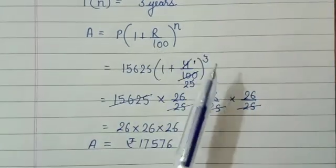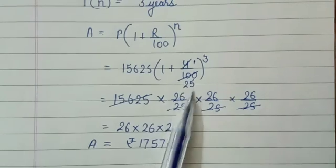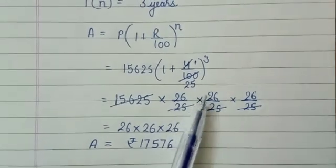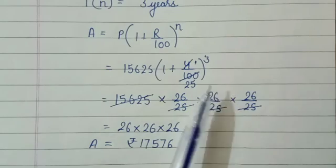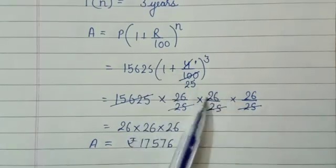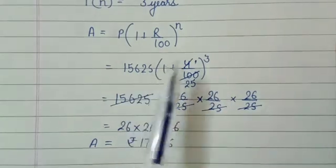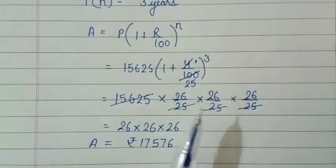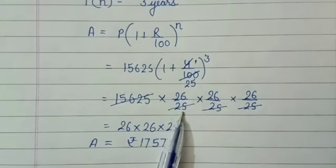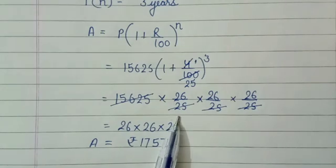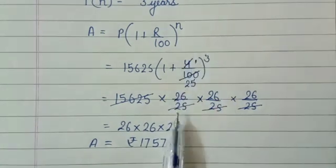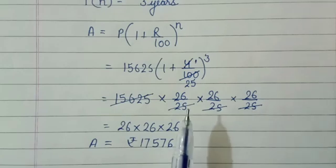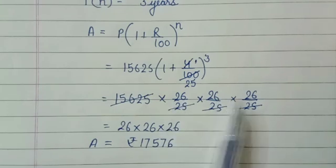After putting in the values, we cancel 25, and 25 into 1 gives 25, plus 1 means 26, so we get 26/25. We have to cube it, so we write it three times.